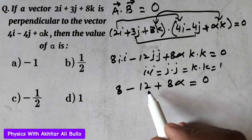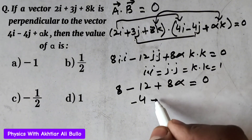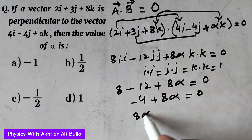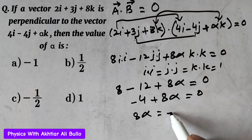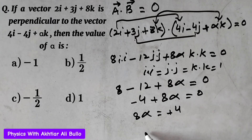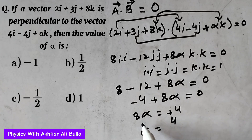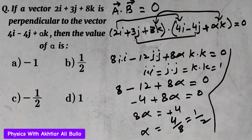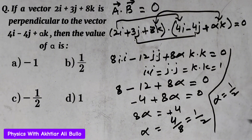So 8 minus 12 gives minus 4, and minus 4 plus 8 alpha equals 0. To find alpha, we take minus 4 to the other side, giving 8 alpha equals 4. Dividing both sides by 8, alpha equals 4 upon 8, which simplifies to 1 upon 2. So the correct option is b) 1 upon 2.